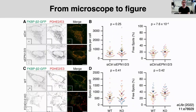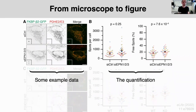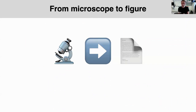To underscore this: a figure from a paper my lab published this year. I'm focusing on the top two panels. Panel A contains example data, and panel B contains the quantification. That is what I'm going to talk about today — how we go from microscope to figure, how we get panel A and panel B.